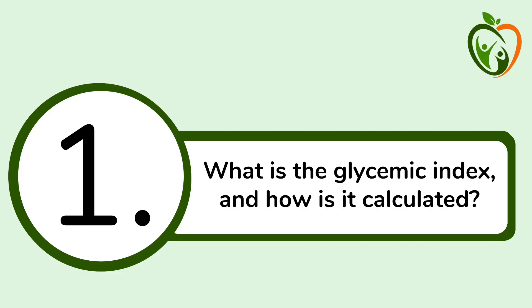The terms glycemic index and glycemic load both relate to how much a food, a meal, or a diet affects blood sugar levels. Think of them as scoring systems. The higher the number, the more the food or the meal will increase blood sugar levels. Let's first take a closer look at the glycemic index and how it's calculated.